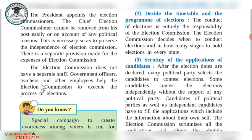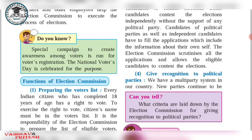Government officers, teachers, and other government employees help the Election Commission to execute the election process. During elections, their duty is assigned at polling stations; after the election is over, they are no longer needed. So only three people are permanent — the Chief Election Commissioner and two Deputy Chief Election Commissioners.